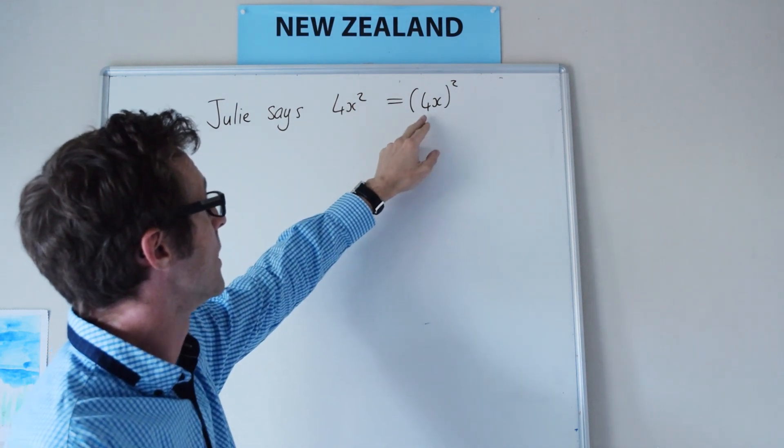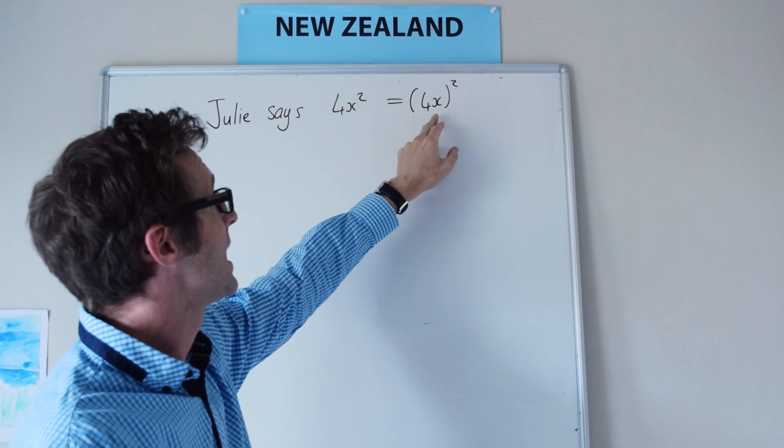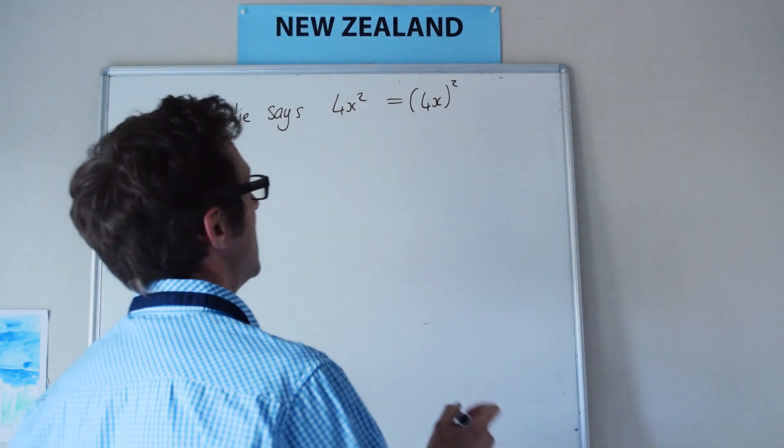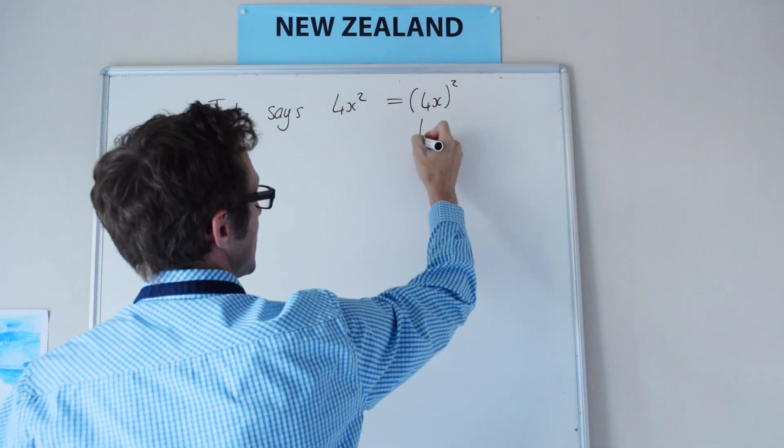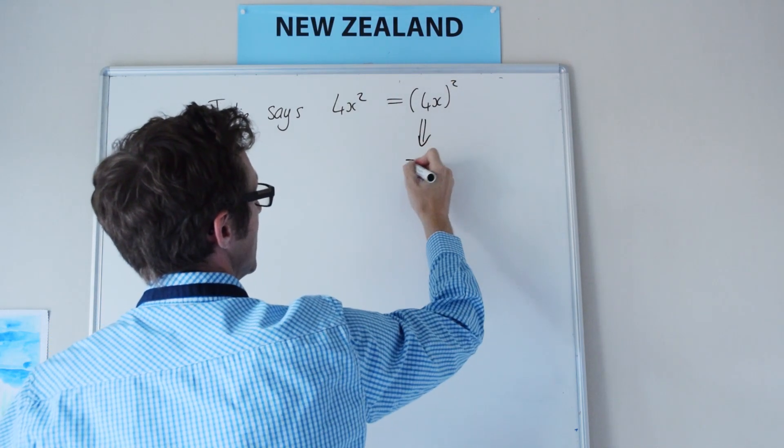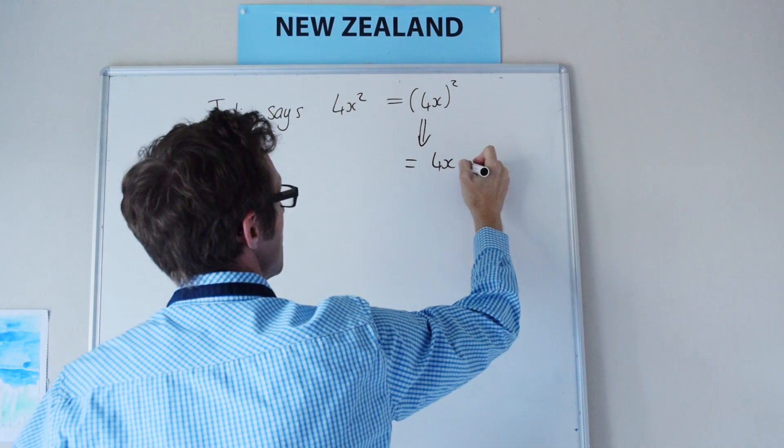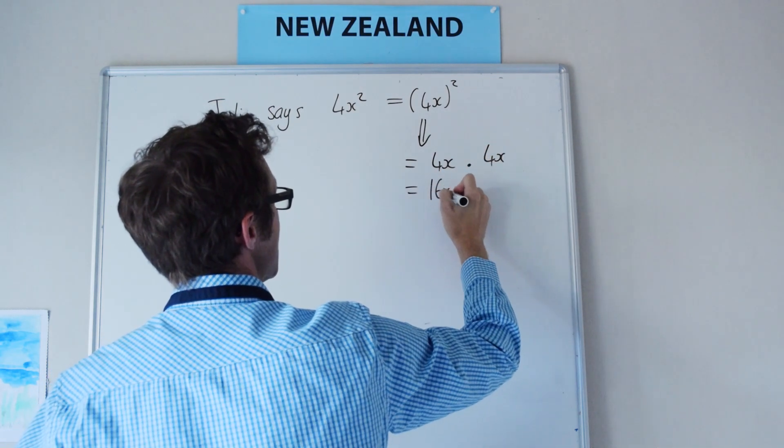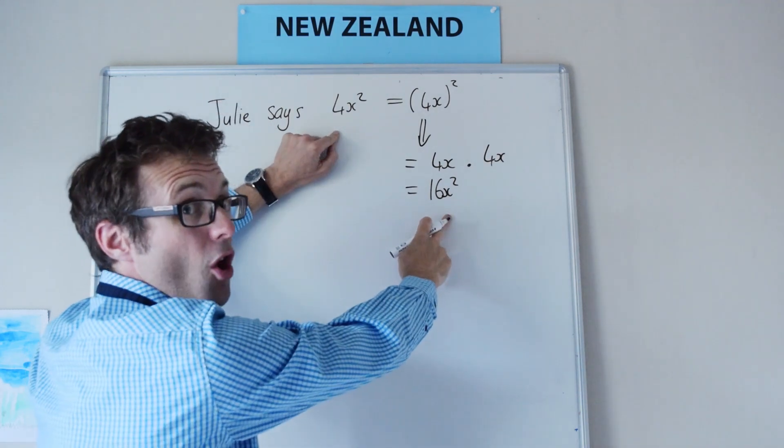What about this one? 4 times 2 is 8, 8 squared is 64, so that's not equal. This here is actually equal to 4x multiplied by 4x, which is equal to 16x squared. They are not the same.